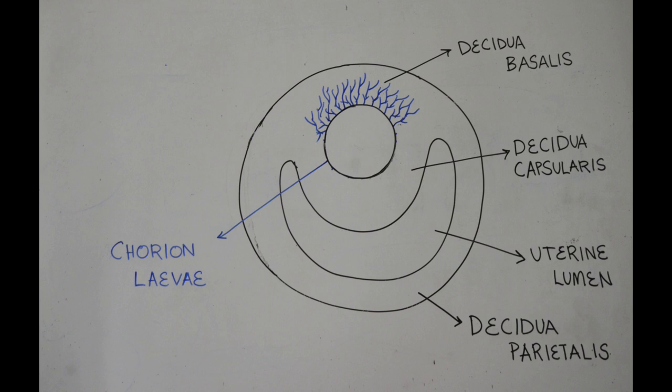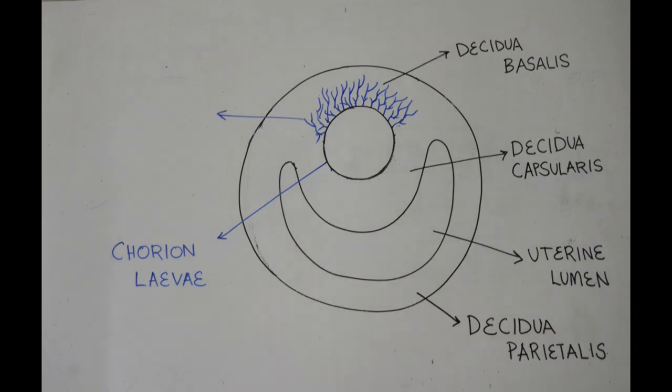...decidua basalis undergo considerable development. Along with the tissues of the decidua basalis, these villi form a disc-shaped mass which is called the placenta. The part of the chorion that helps to form the placenta is called chorion frondosum.